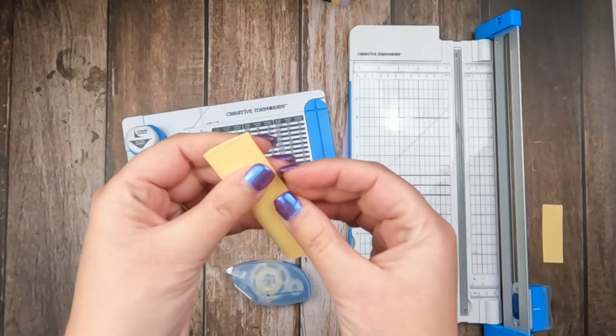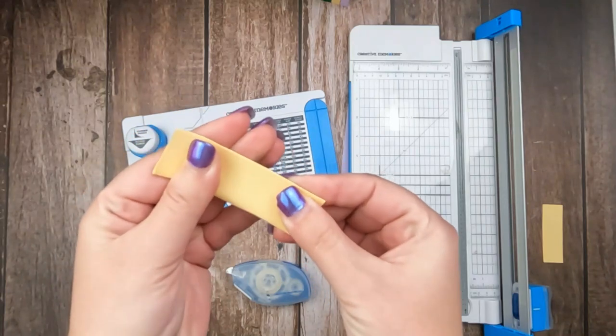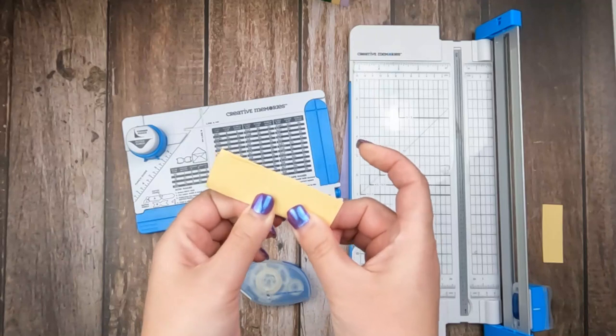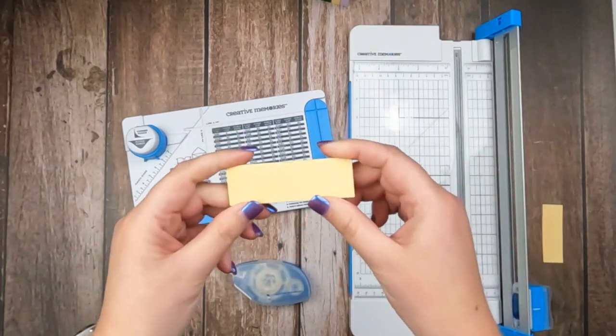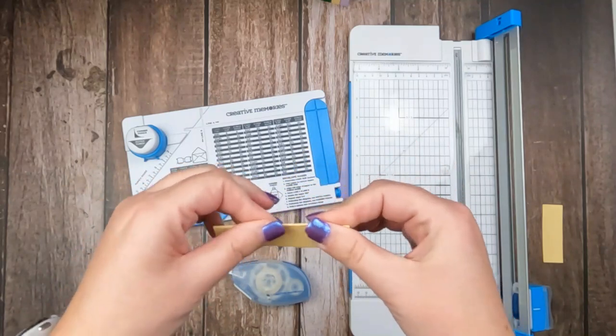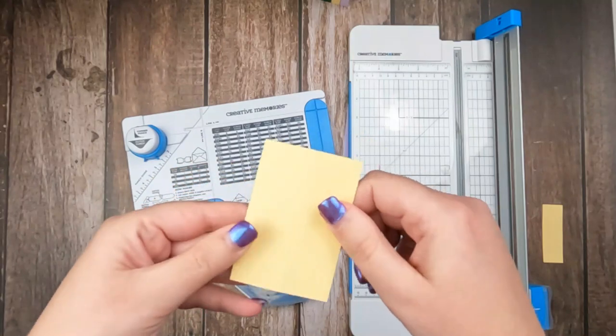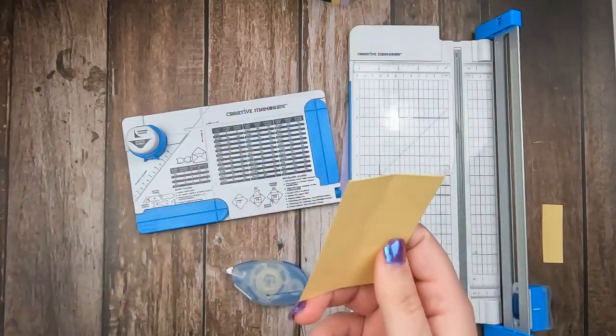So now I have a three inch by two inches rectangle. You can use your scoring blade and score it in half, or you can just fold it over. And you're folding it so that it is long and not fat, if that makes sense.